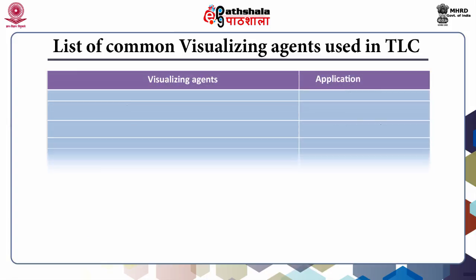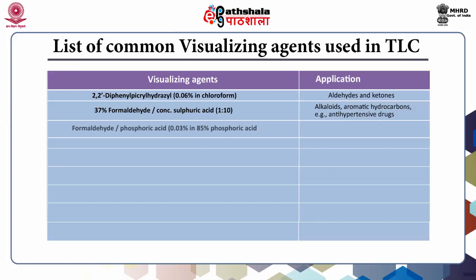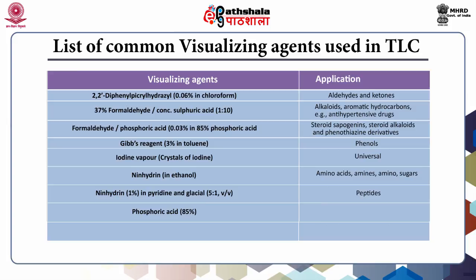Continuing with the common visualizing agents: 2,2'-diphenylpicrylhydrazyl for aldehydes and ketones. Formaldehyde and sulphuric acid combination for alkaloids and aromatic hydrocarbons. Formaldehyde and phosphoric acid combination for steroids and alkaloids. Gibbs reagent for phenols. Iodine vapour, also known as the universal stain, for identification of all organic compounds. Ninhydrin for amino acids, amines, and amino sugars. Ninhydrin with pyridine and glacial acetic acid for peptides. Phosphoric acid for steroids, sterols, and bile acids. Potassium hydroxide and vanillin solution for amino acids and amines.